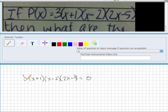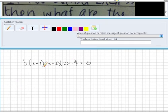And then we're going to solve for each factor equal to 0. So kind of like you're used to doing in algebra: x plus 1 equals 0, x minus 2 equals 0, and 2x minus 5 equals 0.